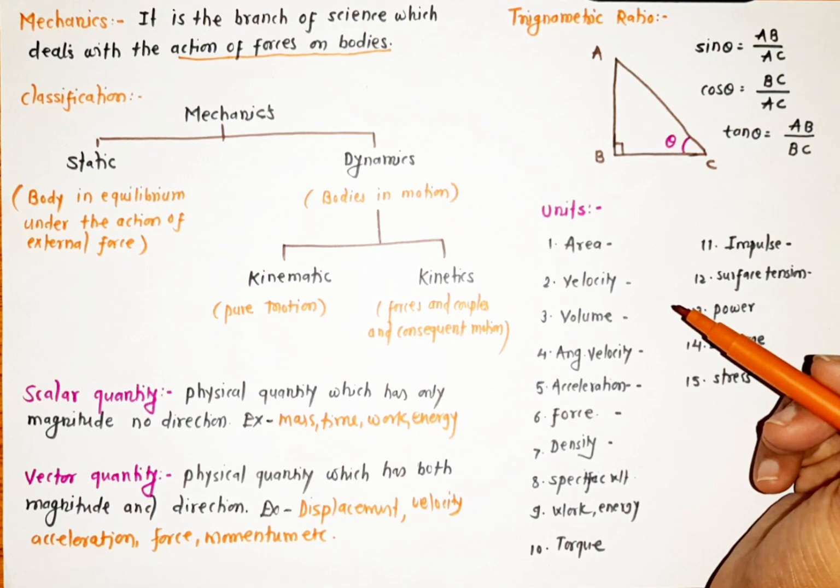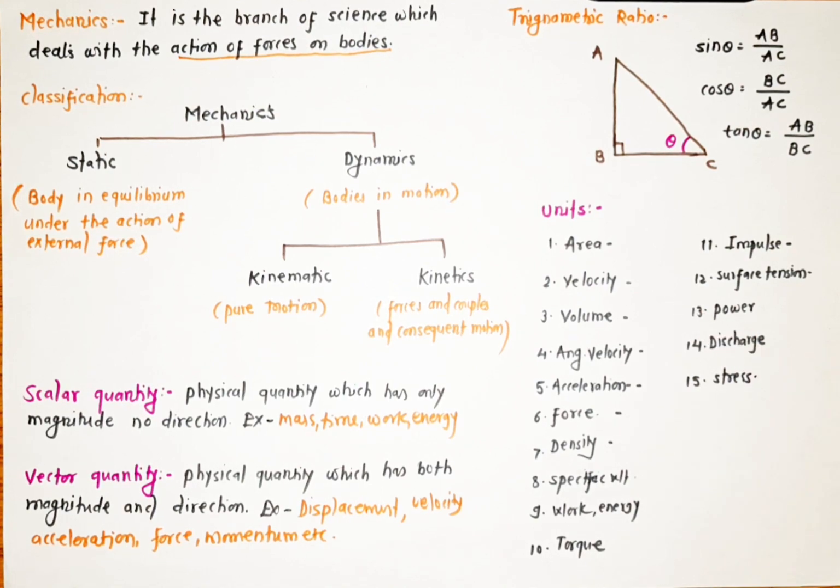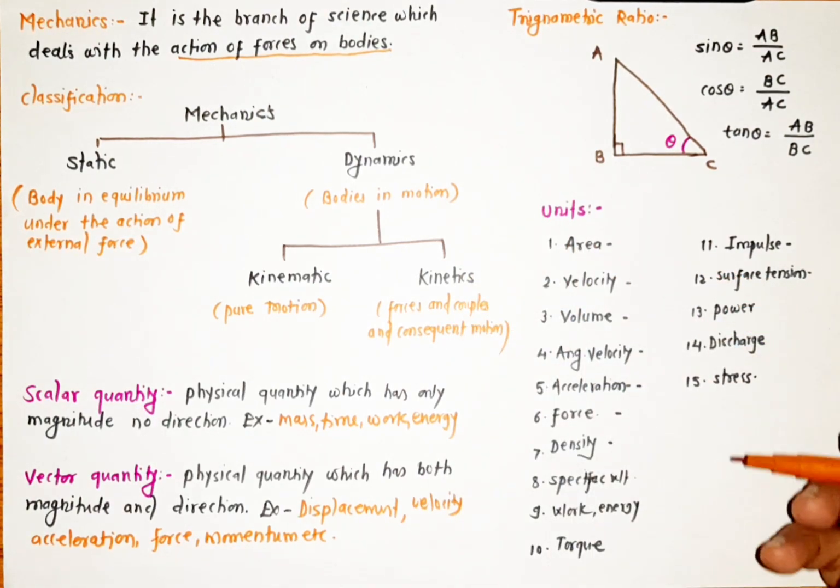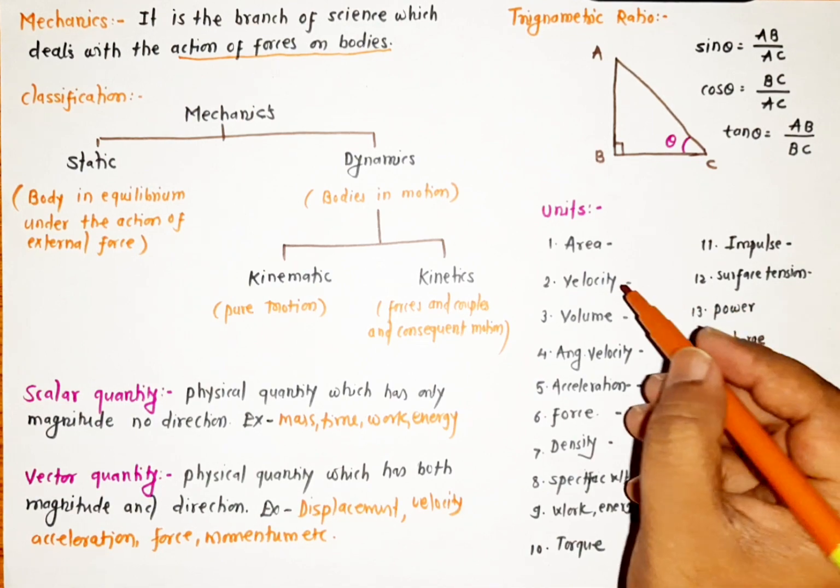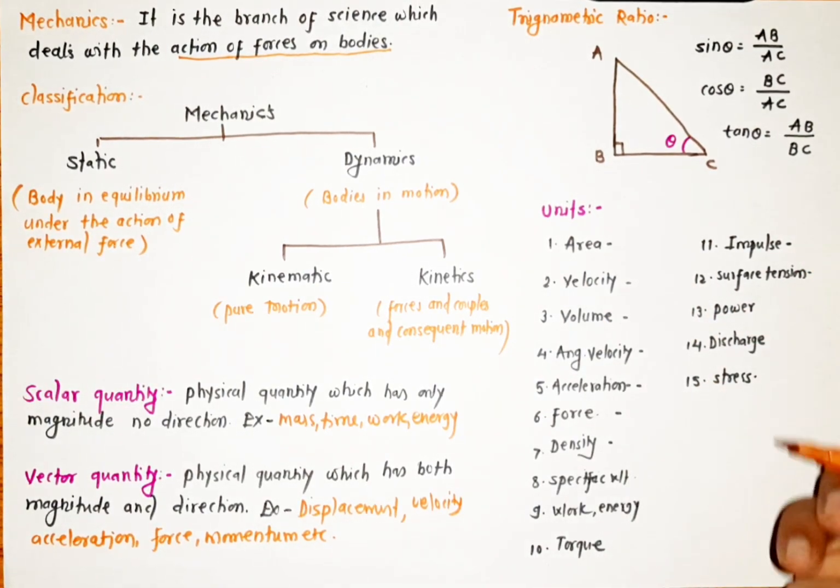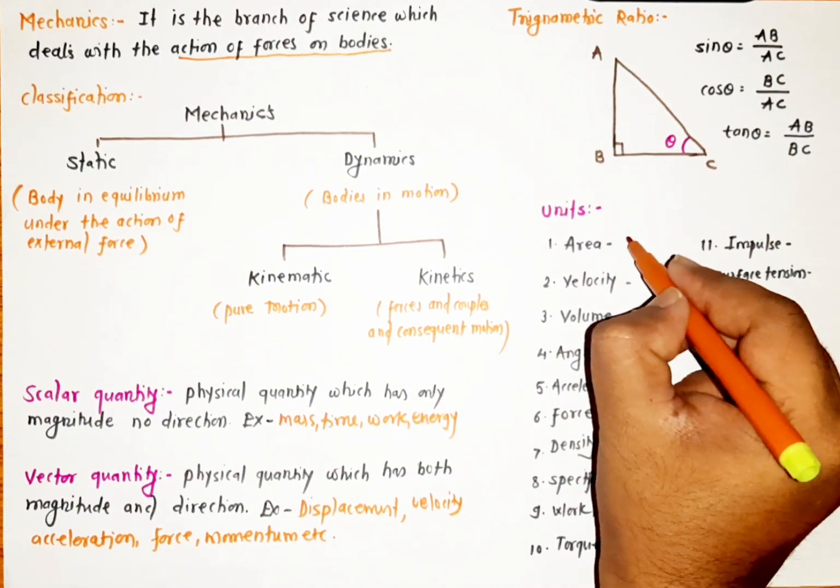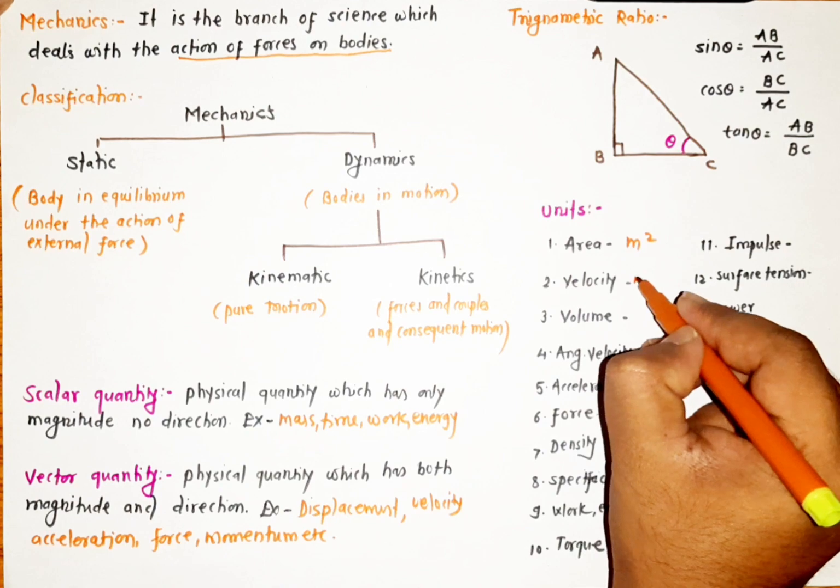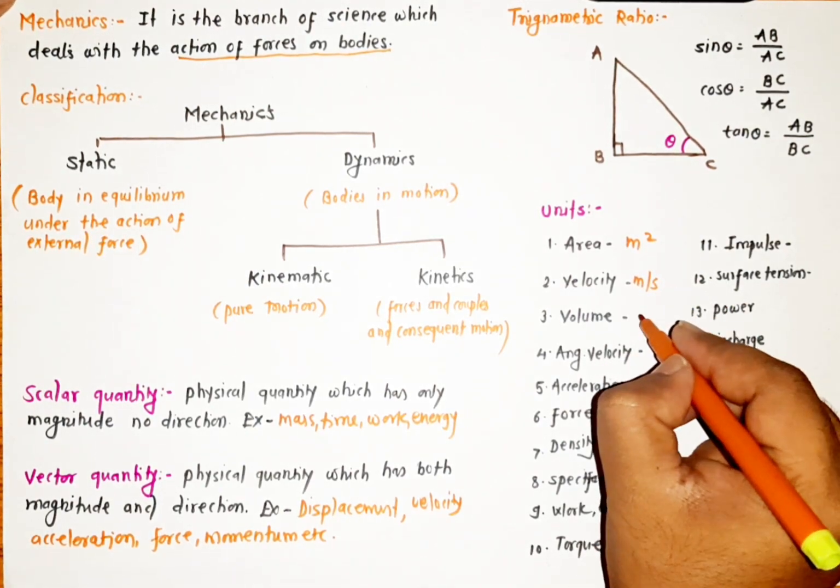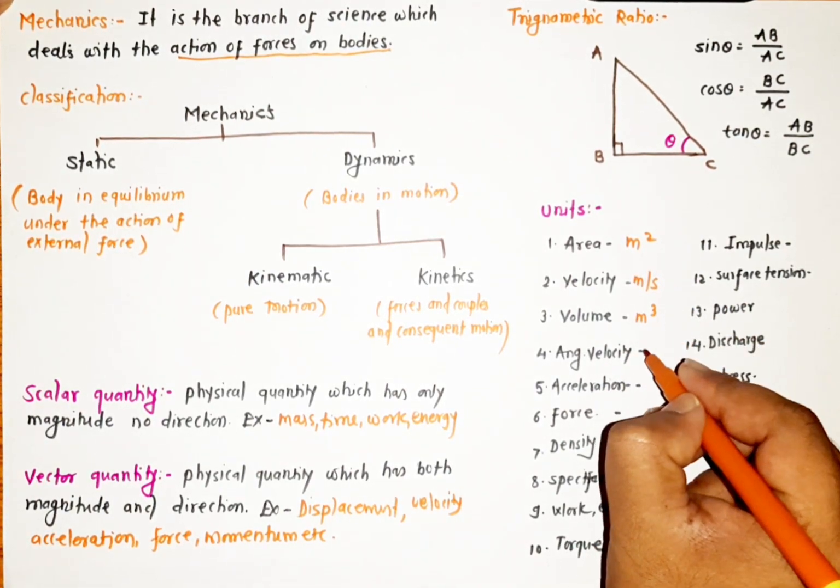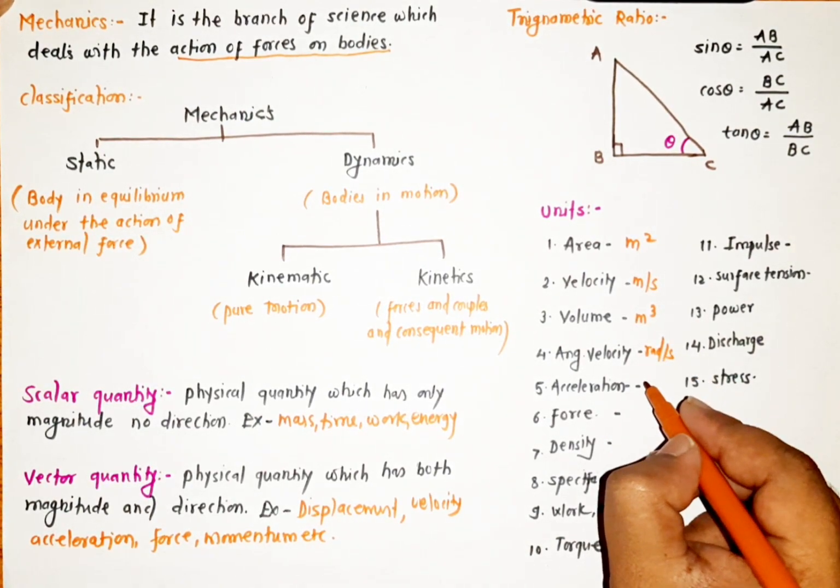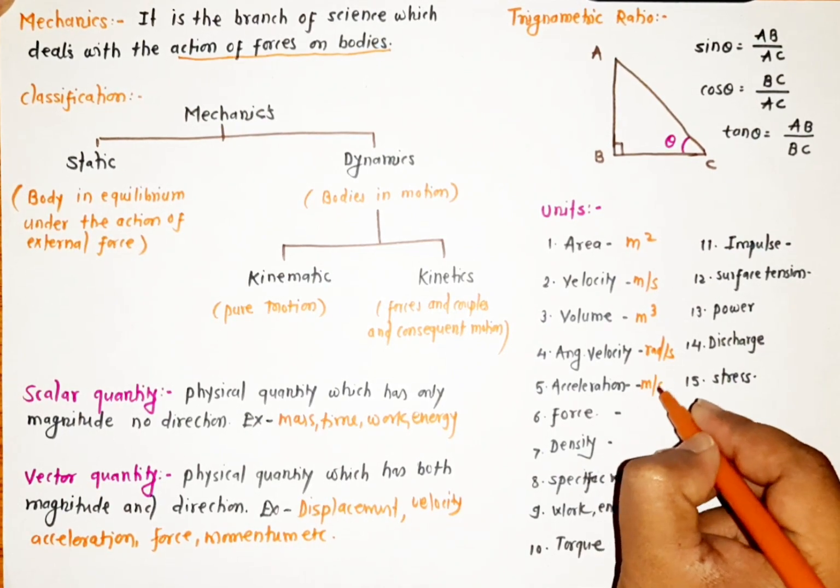Another topic is units. I've written here about 15 units. We want to write down the units of each term. Area we express in meter square, velocity in meter per second, volume in meter cube, angular velocity in radian per second, and acceleration in meter per second square.